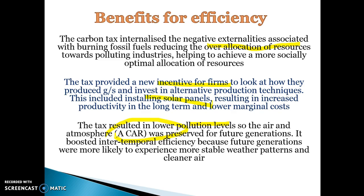This boosted intertemporal efficiency, because future generations will have more stable weather patterns and cleaner air. By reducing the negative externality — in this case, greenhouse gas emissions causing unstable weather patterns, cyclones, and droughts — we're able to preserve the common access resource. The key link you need to make is: reduce the negative externality, preserve the common access resource.